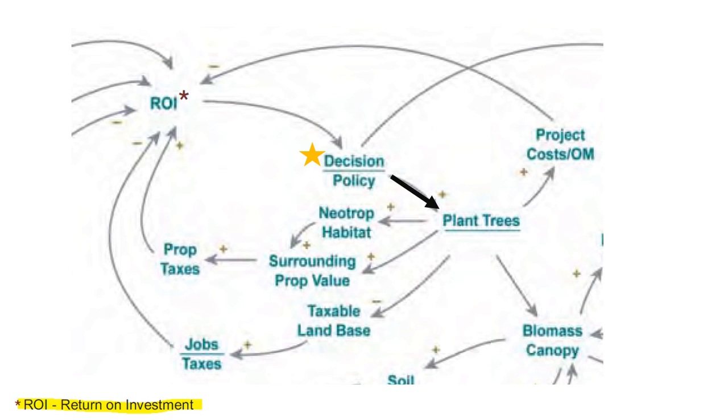We know that if we add the policy, that will have a direct effect on planting trees, and it's a positive or direct relationship because if we add the policy, we add more trees. If we don't add the policy, then there won't be trees added. There's a positive relationship between planting trees and surrounding property value. If we plant more trees, property values will go up. If we plant fewer trees or remove trees, property values will go down.